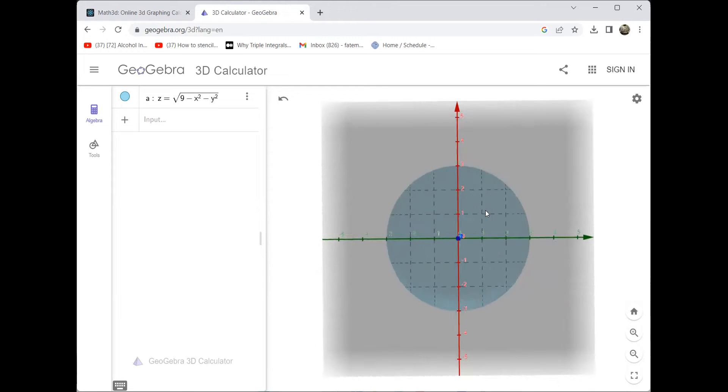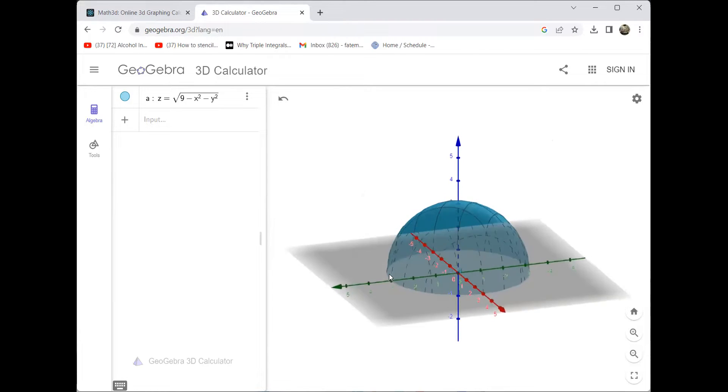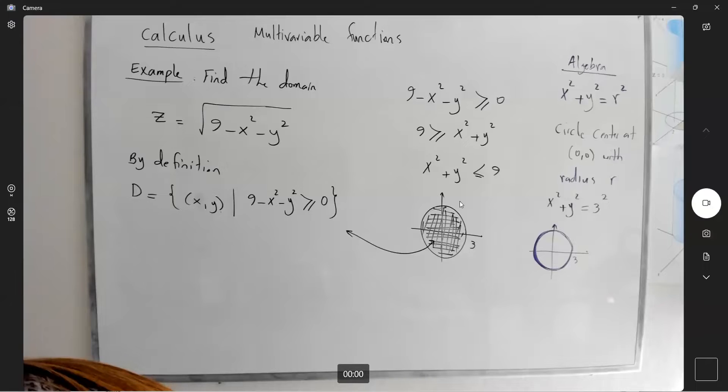All points inside the circle are also taken. They are part of your domain. So that's why our domain is shaded on and inside the circle of radius 3. You have a disk here.